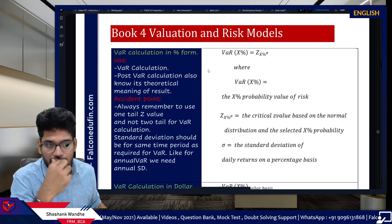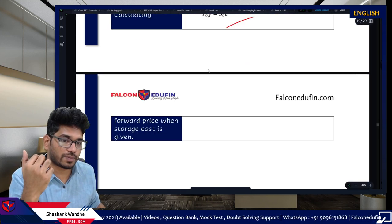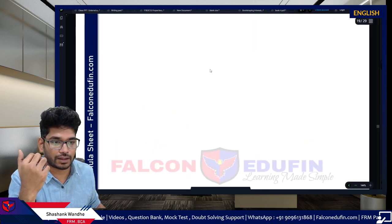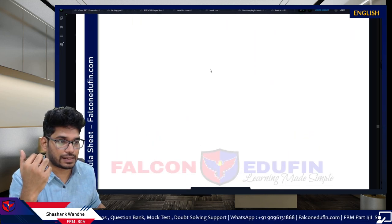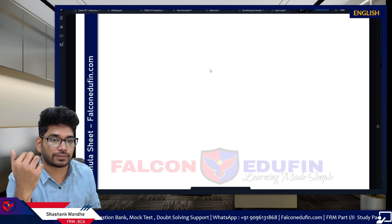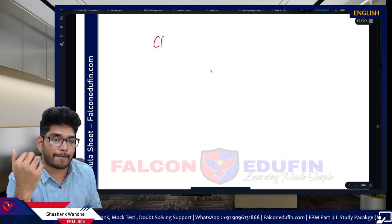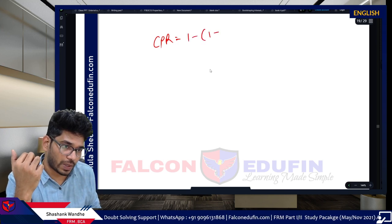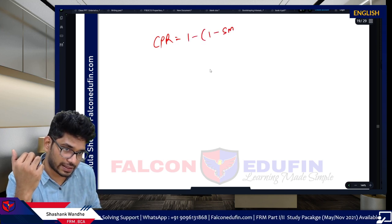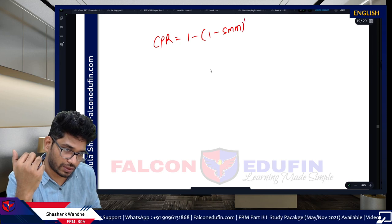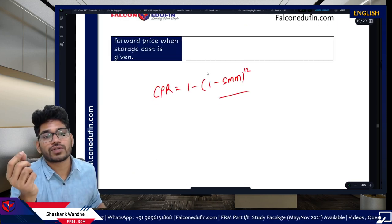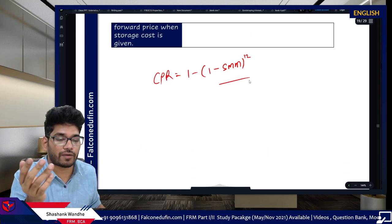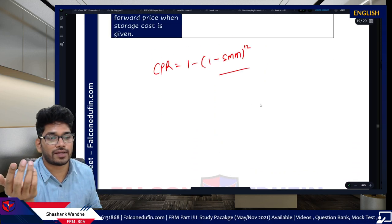Moving to Book 4 — Valuation and Risk Models. One formula missing in the sheet is the MBS prepayment formula: CPR = 1 - (1 - SMM)^12, where CPR is the conditional prepayment rate and SMM is the single monthly mortality rate. Easy formula — even I remember it, so everyone should be able to.